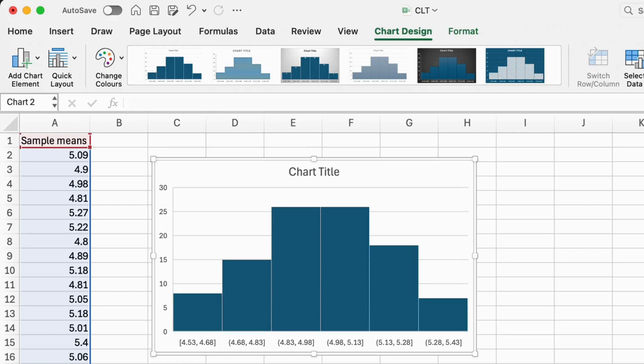Observe how the distribution resembles a bell curve, even though the original customer arrivals followed a Poisson distribution.